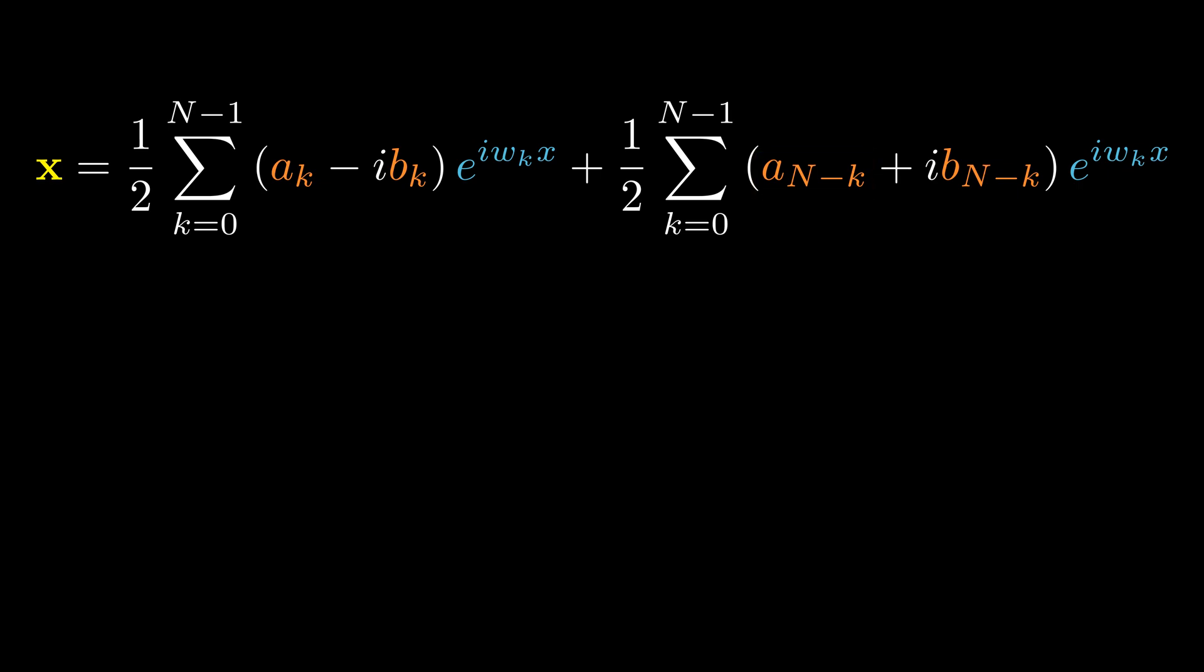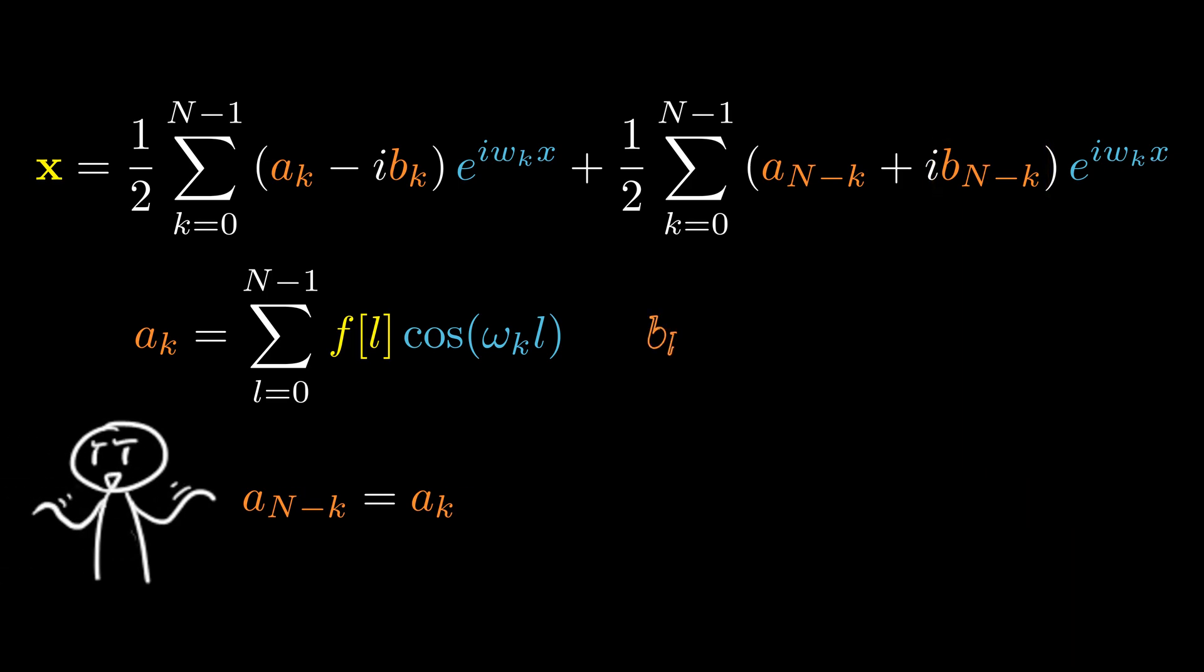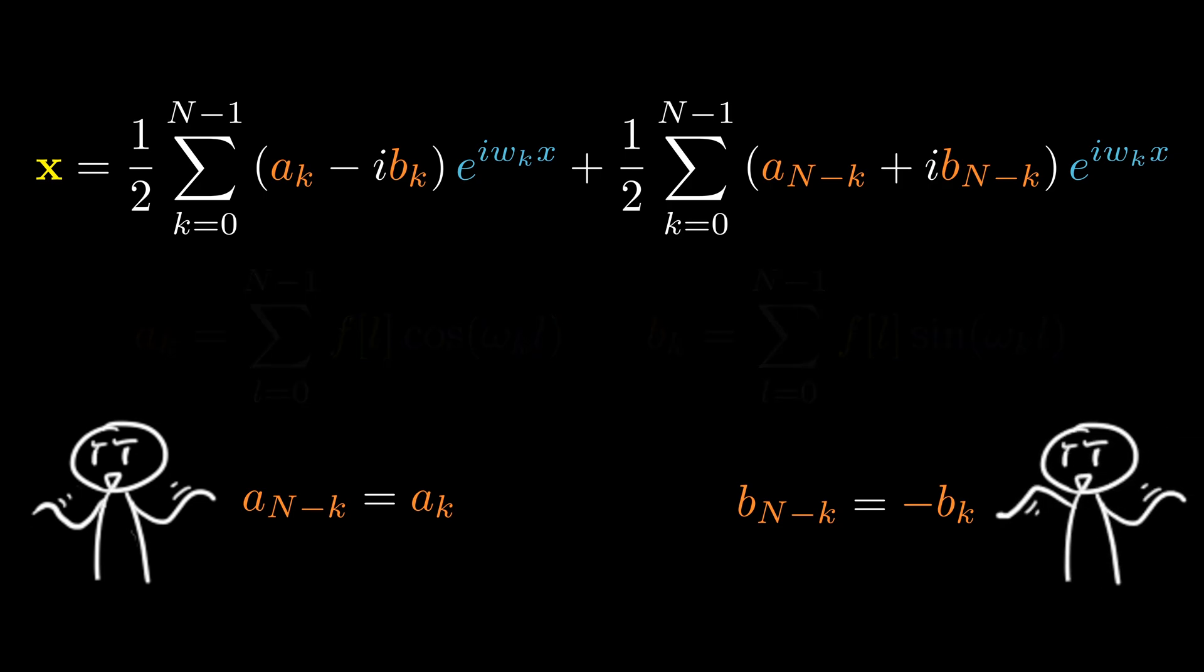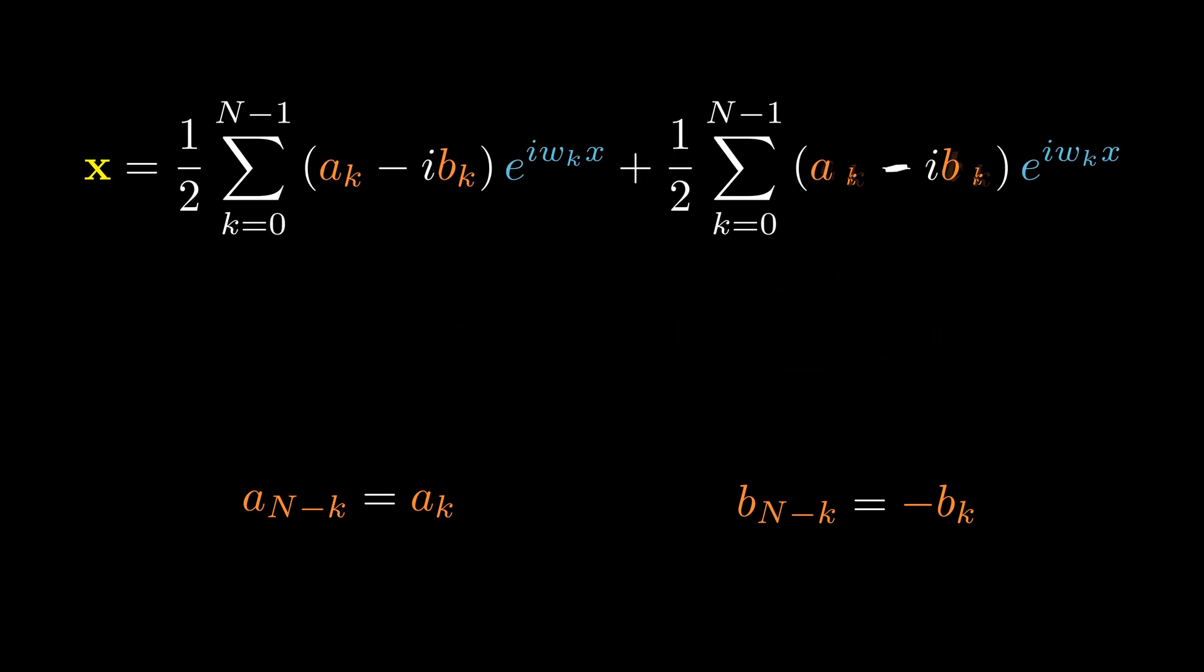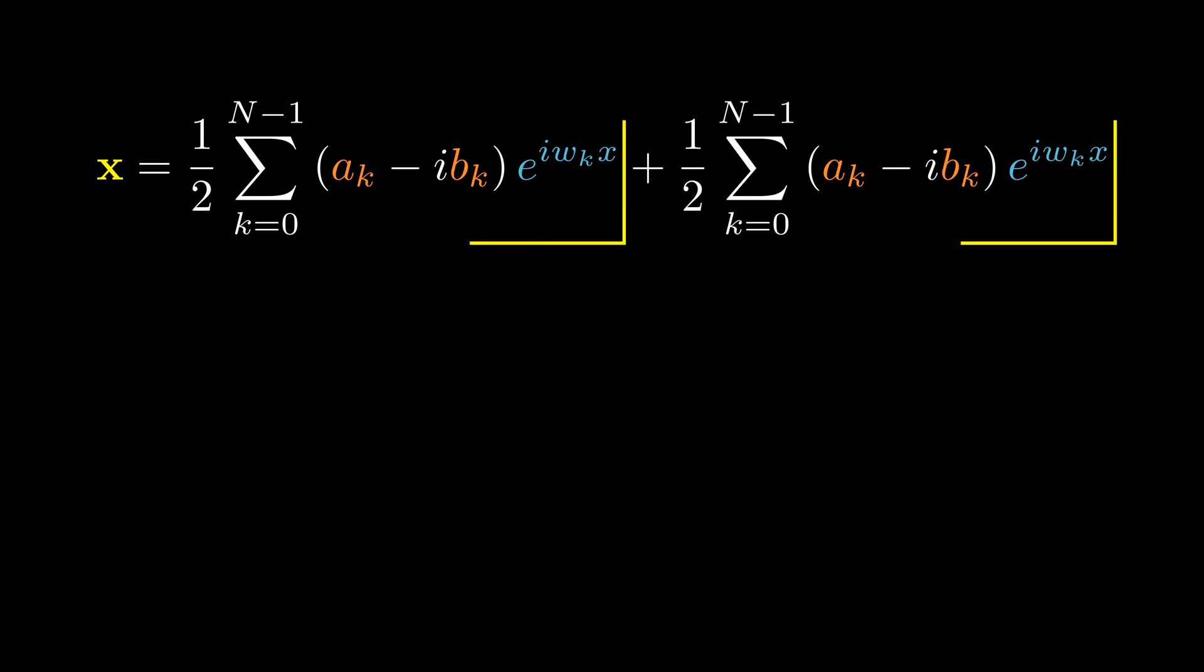Recall that the coefficient a k is the inner product between the signal and the cosine basis vector. a n minus k is the same as a k because cosine is an even function. Similarly, the coefficient b k is the inner product between the signal and the sine basis vector. b n minus k is negative b k because sine is an odd function.